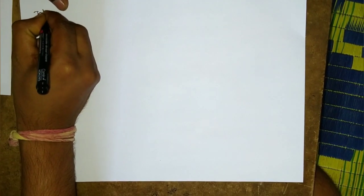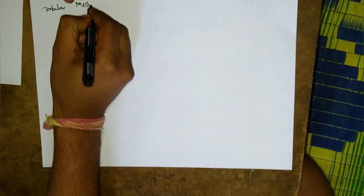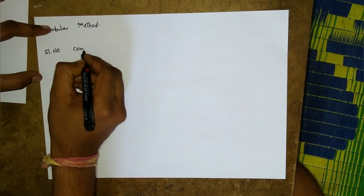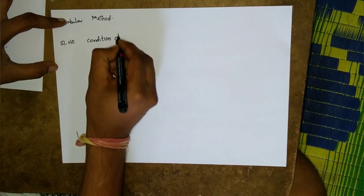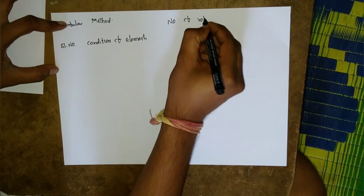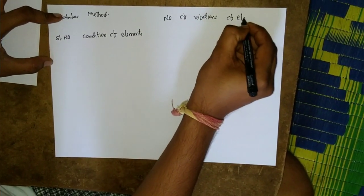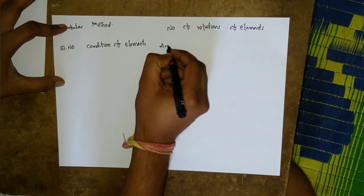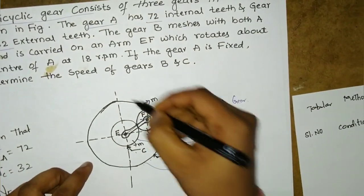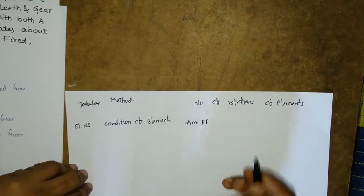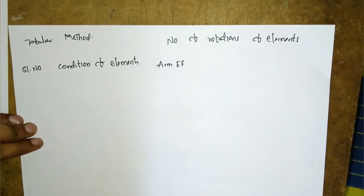We will use the tabular method to solve this problem. The table has columns for serial number, condition of elements, and number of rotations of elements. The elements are: arm EF, gear C, gear B, and gear A — listed in this order.